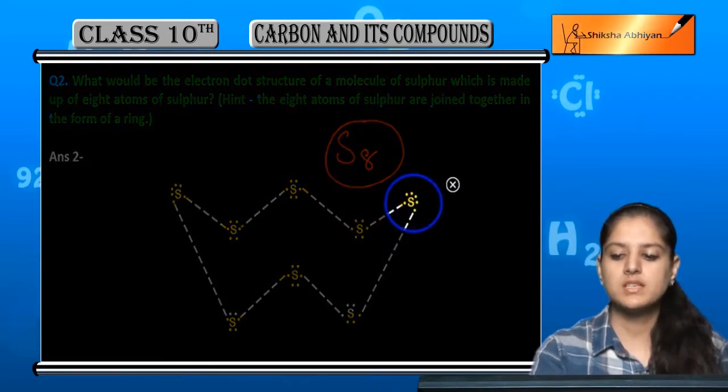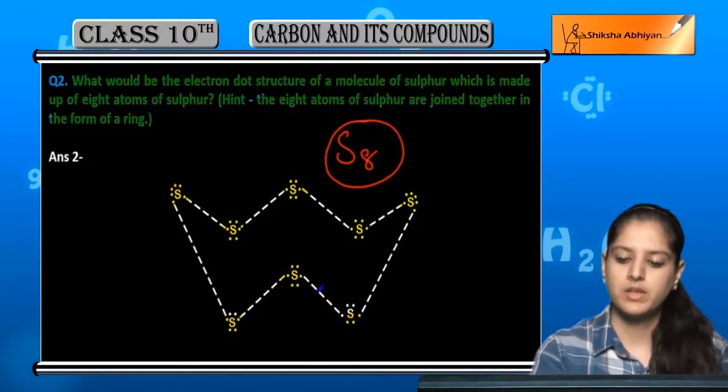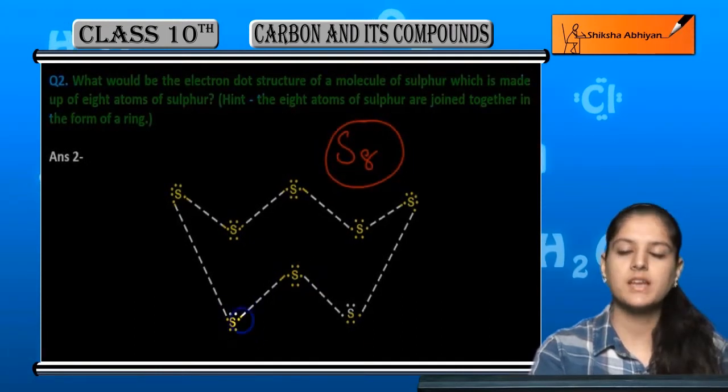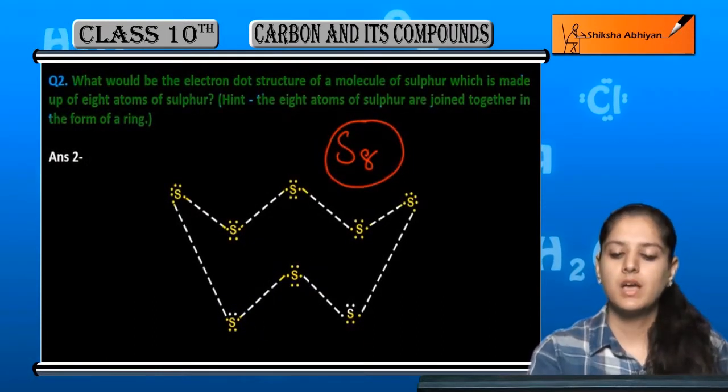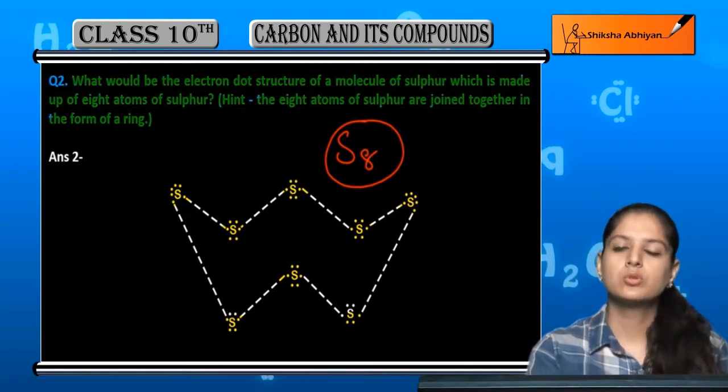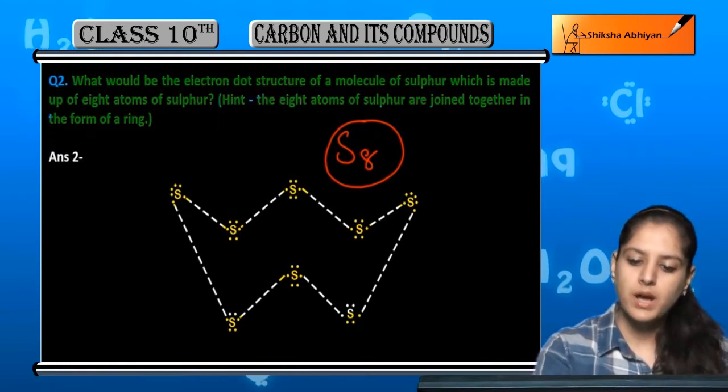Fine. Aise hi abh jab hamne sare electrons bana diye, abh har ek sulfur atom ki apni capacity hooti hai do electrons ko share karne.